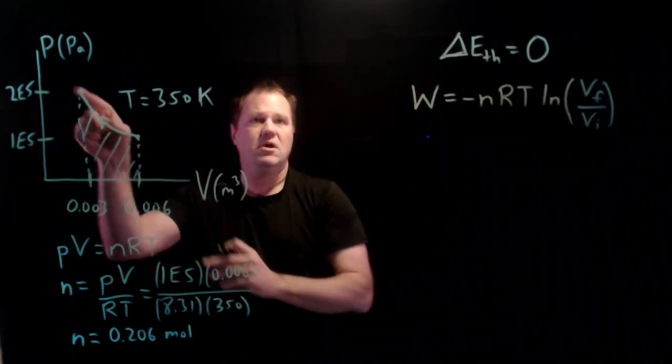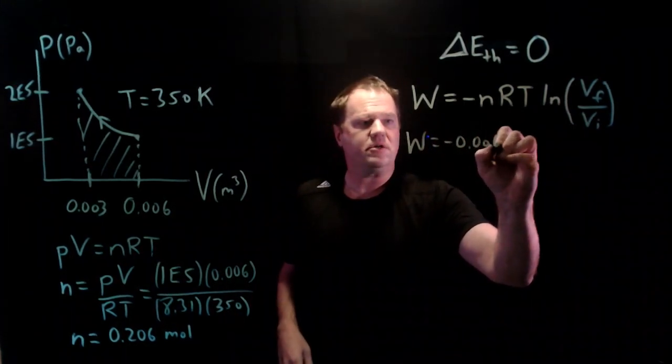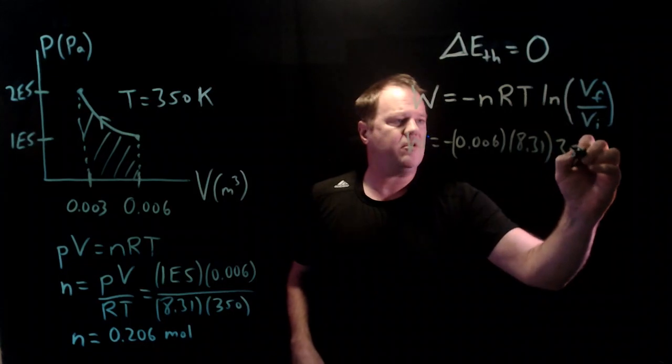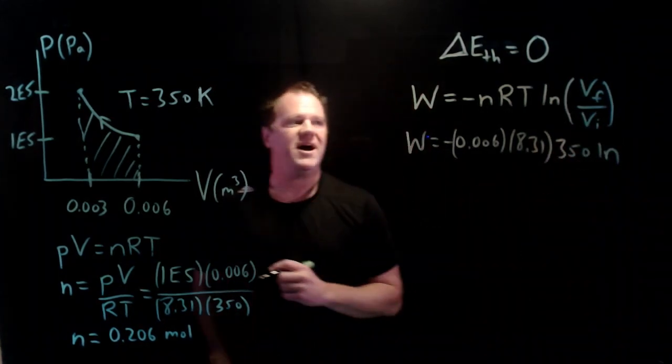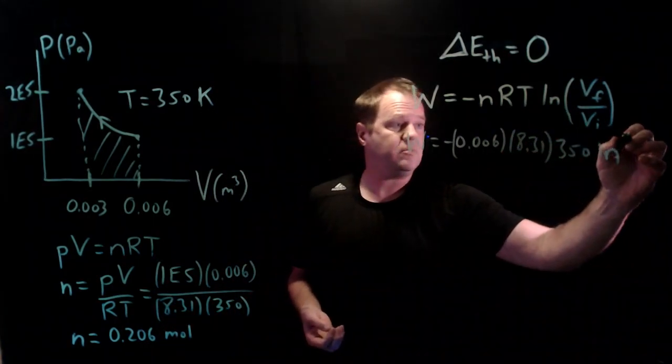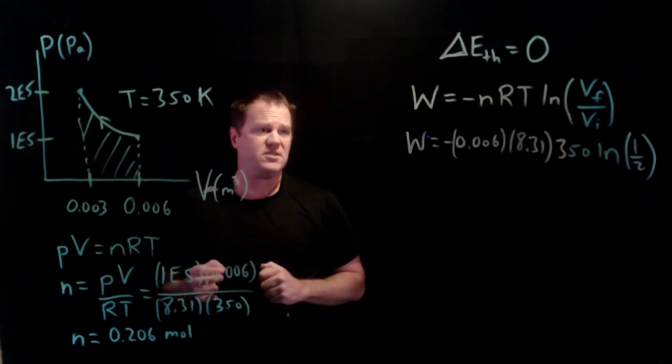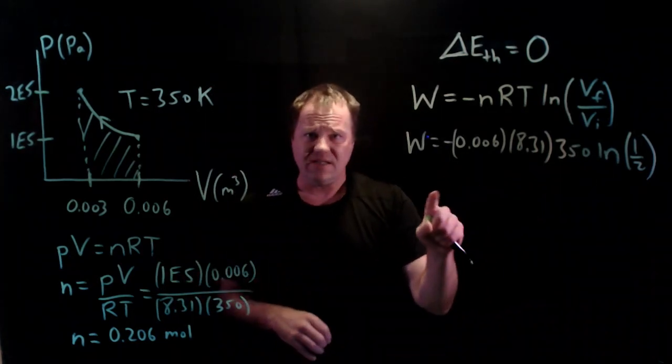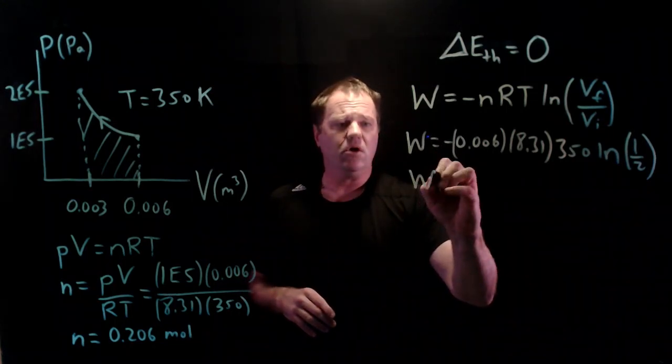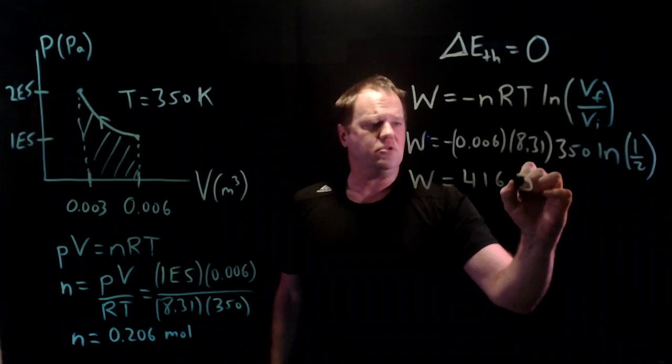Just a matter of chucking numbers into this formula. Again, this thing corresponds to the area under this curve here. So throwing numbers, .006, 8.31 for the ideal gas constant, 350. And let's just do a natural log of a half, because our final volume is one half our initial volume. We can just make this a little easier, natural log of a half. And so we do end up with the right sign because we're taking natural log of something less than one, and so that cancels out this minus sign. We do get positive work for the compression as expected. And you throw those numbers in your calculator and it will spit out 416 joules.